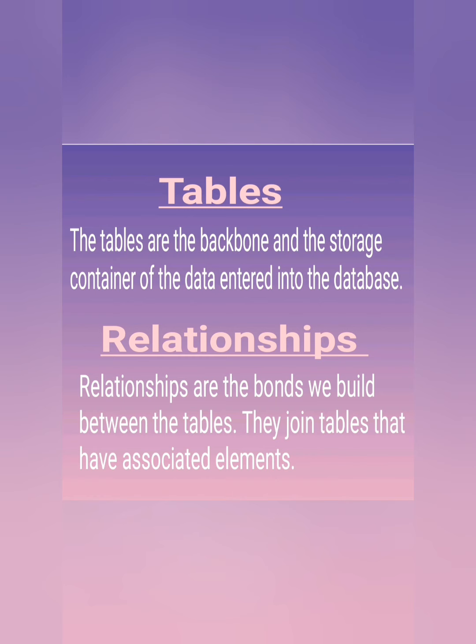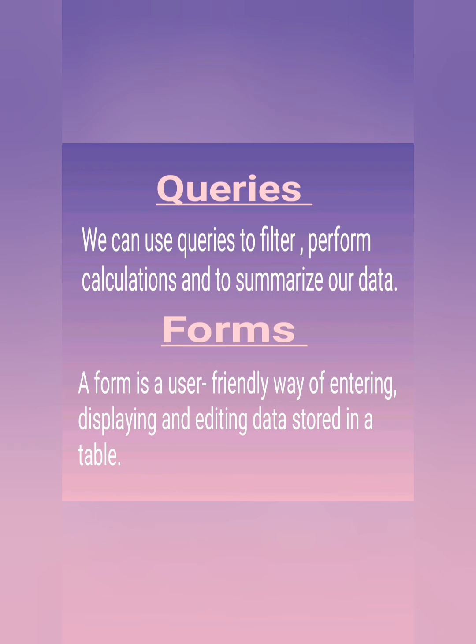Next one is Relationship. यह एक या एक से अधिक tables के बीच में बनाया हुआ एक bond है, जो कि उन tables को join करता है, जिसमें उससे संबंधित elements रहते हैं. Next one is Queries. जब हमसे हमारे data के बारे में कोई specific question पूछा जाता है, तब हम data को directly देखकर answer नहीं दे पाते हैं, या देना मुश्किल होता है. ऐसे में हम queries option का use करते हैं.